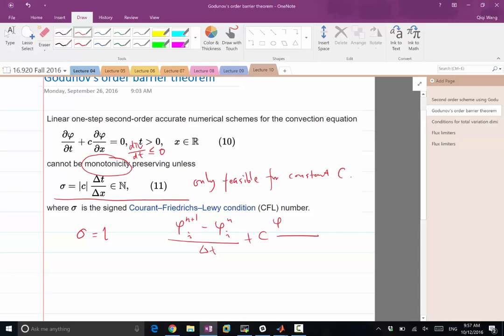when C is greater than zero. So for the spatial derivative, phi of i minus phi of i minus 1 n over delta x is equal to 0.